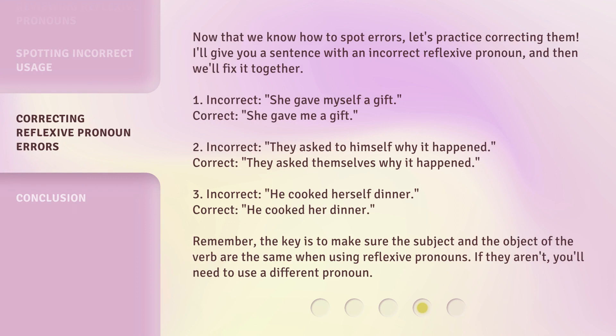Now that we know how to spot errors, let's practice correcting them. I'll give you a sentence with an incorrect reflexive pronoun, and then we'll fix it together. 1. Incorrect: 'She gave myself a gift.' Correct: 'She gave me a gift.' 2. Incorrect: 'They asked himself why it happened.' Correct: 'They asked themselves why it happened.' 3. Incorrect: 'He cooked herself dinner.' Correct: 'He cooked her dinner.' Remember: the key is to make sure the subject and the object of the verb are the same when using reflexive pronouns. If they aren't, you'll need to use a different pronoun.